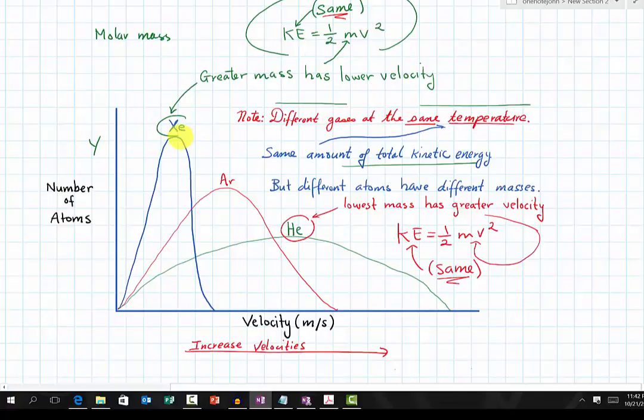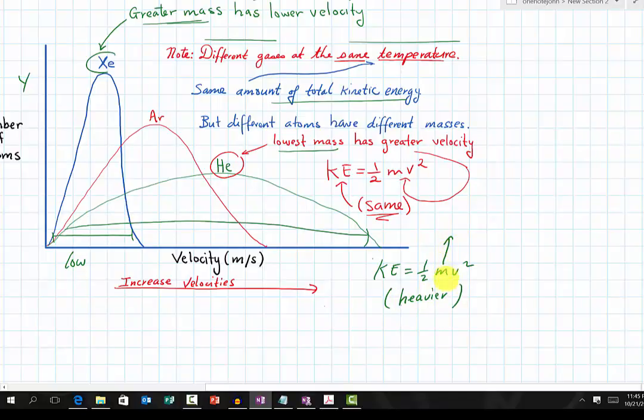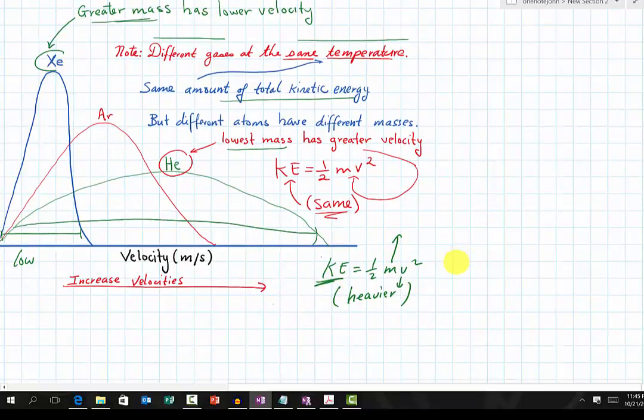However, different gases have different ranges of velocity. Look at xenon. Xenon has the greatest mass. KE = 1/2 mv². In this case, for a heavier molecule, the mass is increased, but the velocity decreases because kinetic energy needs to stay the same.